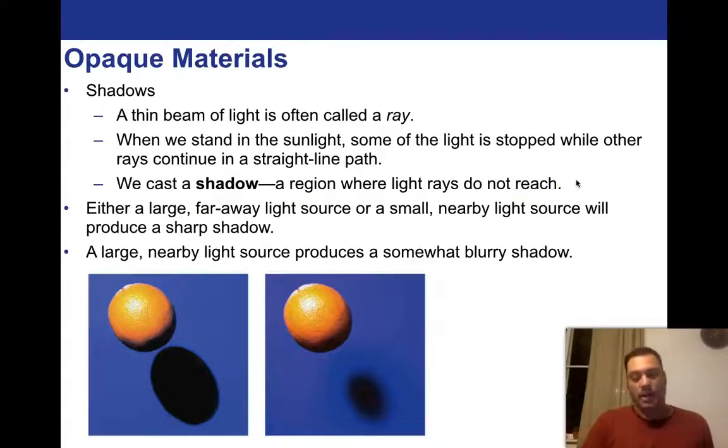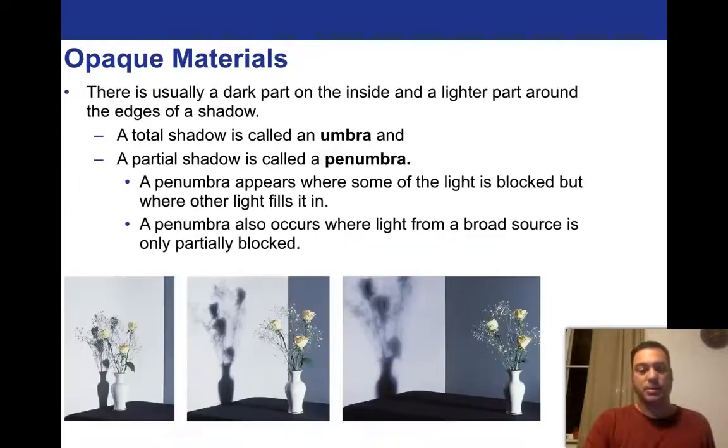So you kind of have the idea of how shadows are. We've known this since we were kids. My own little girl, when she was about nine months old, I remember the day that she recognized her shadow for the first time and began to play with it. Nine months old. So we recognize these things very early on. Either a large far away light source or a small nearby light source will produce a sharp shadow. So keep that in mind. A large far away light source, like the sun, or a small nearby light source, like a flashlight, will produce a sharp shadow. So we see a sharp shadow right here. A large nearby light source produces a somewhat blurry shadow. So imagine taking a really large light and putting it next to this orange and it's going to create a dispersed or blurry shadow. It tells us something about the source.